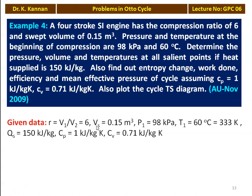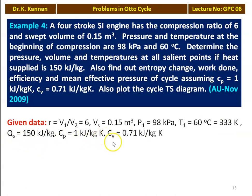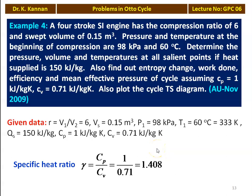Given data: compression ratio V1/V2 equals 6, swept volume Vs equals 0.15 m³, P1 equals 98 kPa, T1 equals 60°C which is 333 Kelvin, heat supplied Qs equals 150 kJ/kg, Cp equals 1 kJ/kg·K, Cv equals 0.71 kJ/kg·K. First we calculate the specific heat ratio gamma equals Cp/Cv equals 1/0.71 equals 1.408.